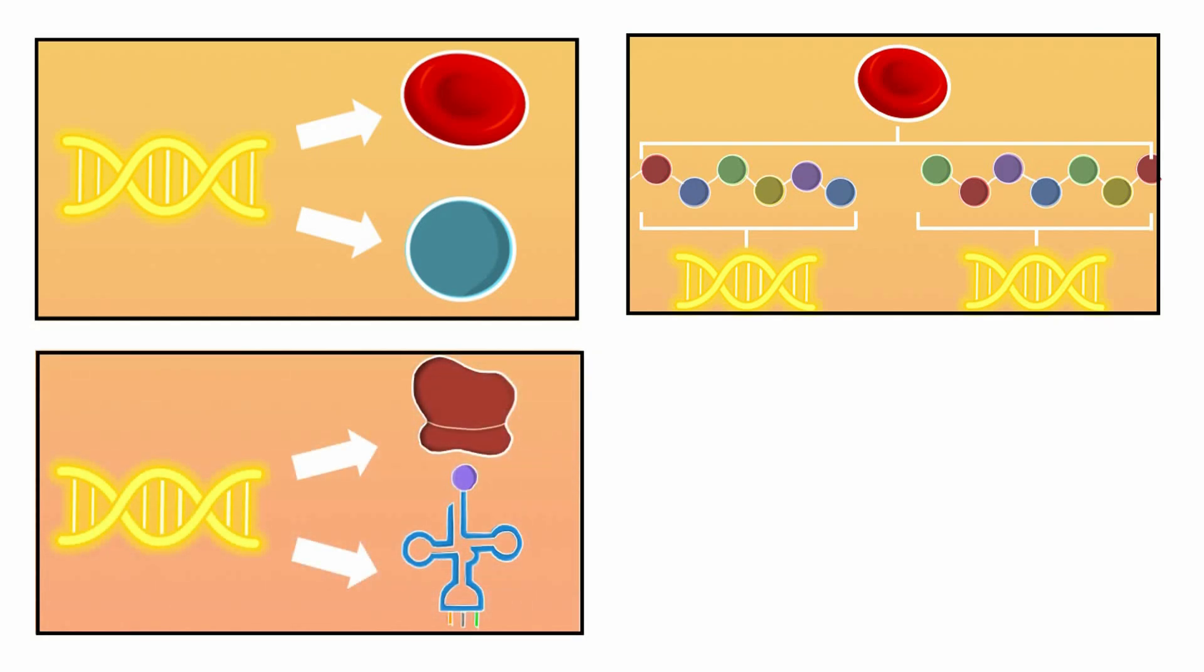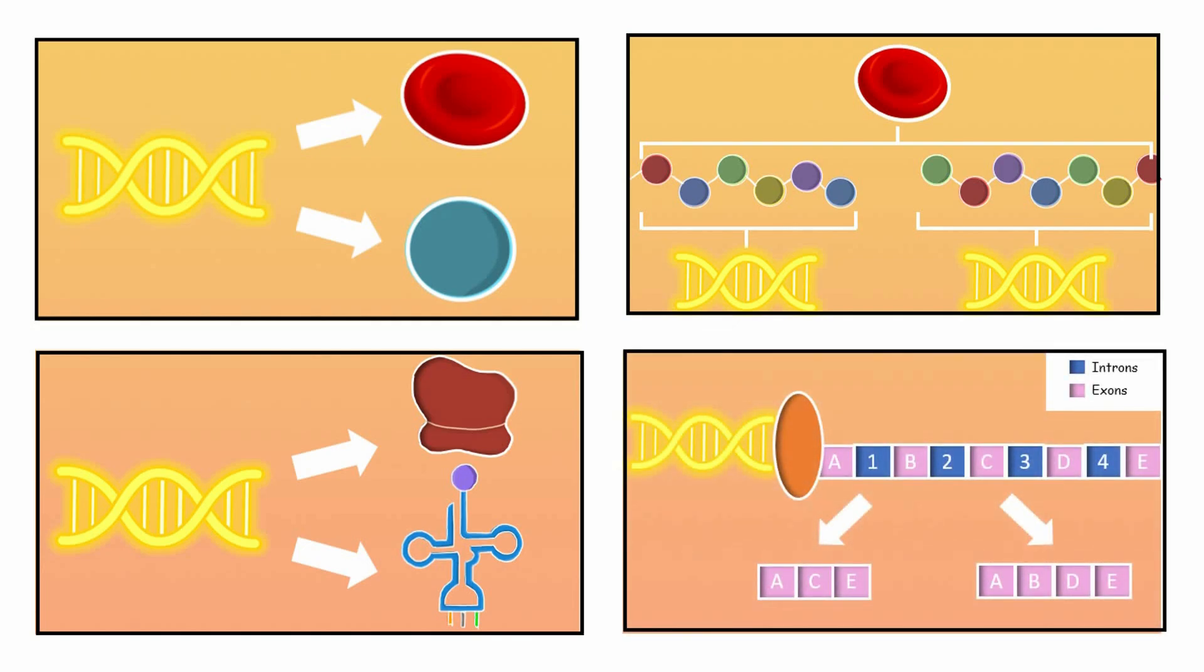Genes can also produce several types of non-coding RNAs, like ribosomal and transfer RNA, and the process of alternative splicing makes multiple proteins from one gene.